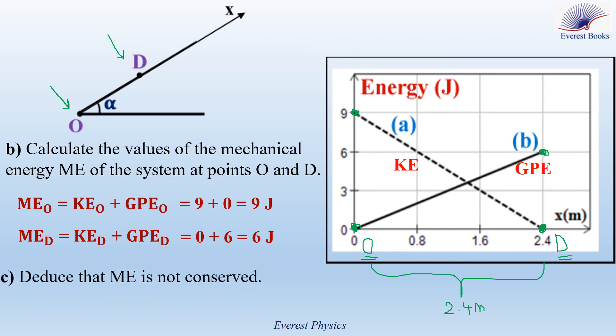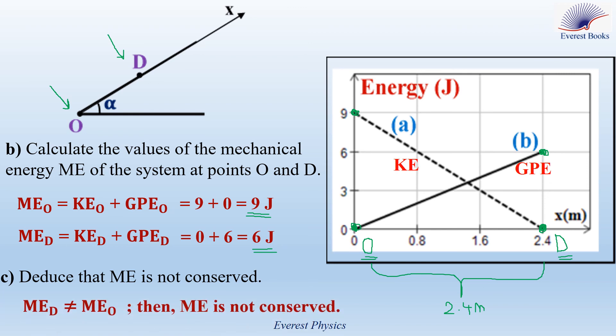Part C: deduce that mechanical energy is not conserved. MEo equals 9 joules and MEd equals 6 joules. Since MEd is different from MEo, the mechanical energy is not conserved along the incline.